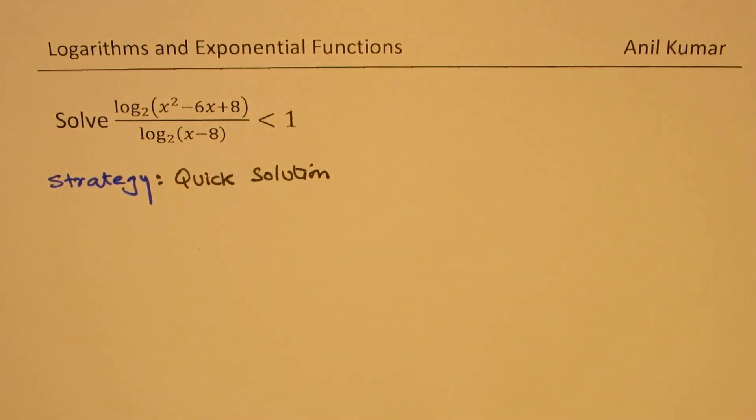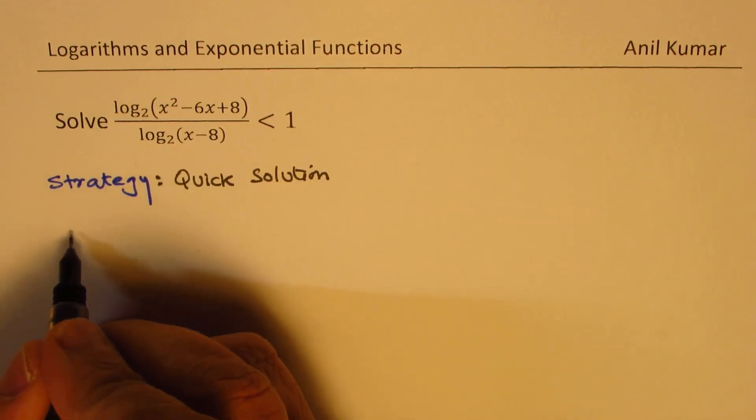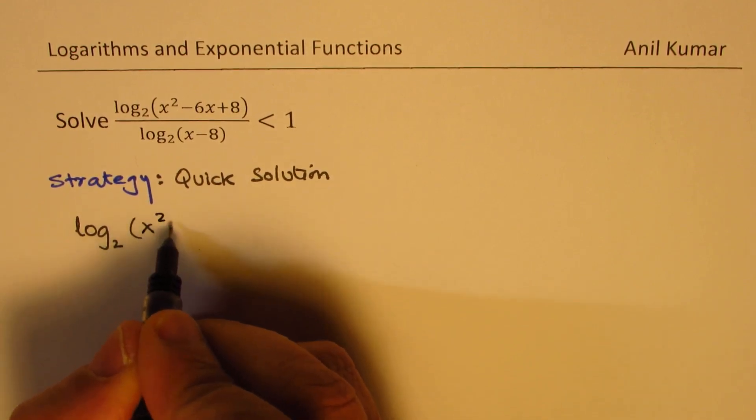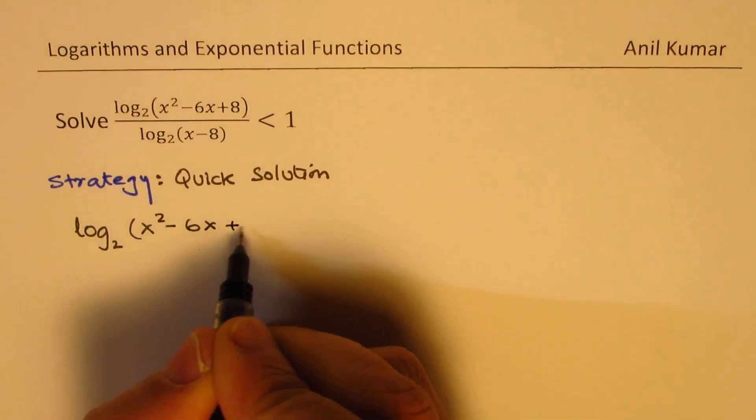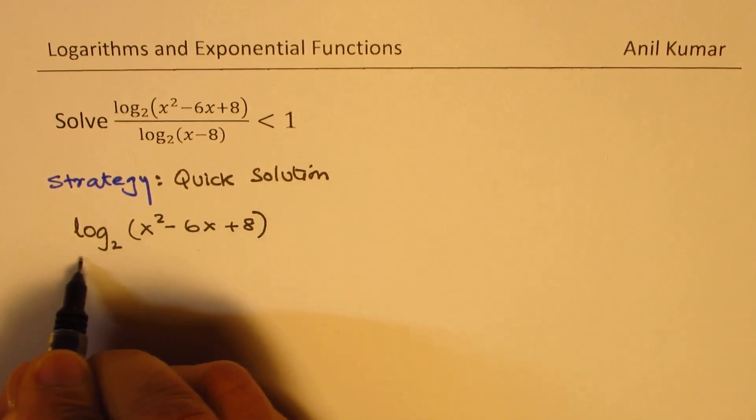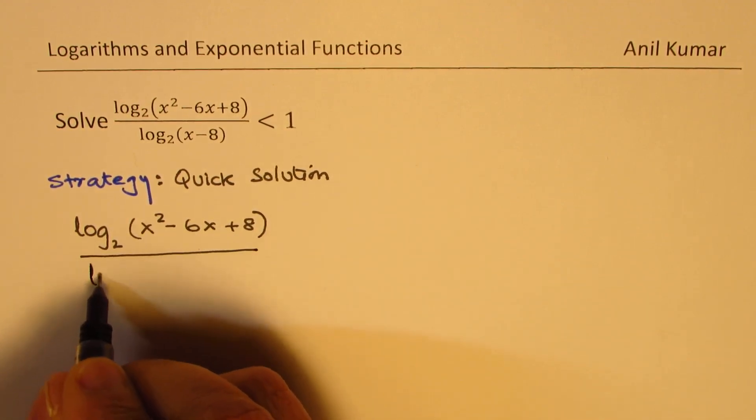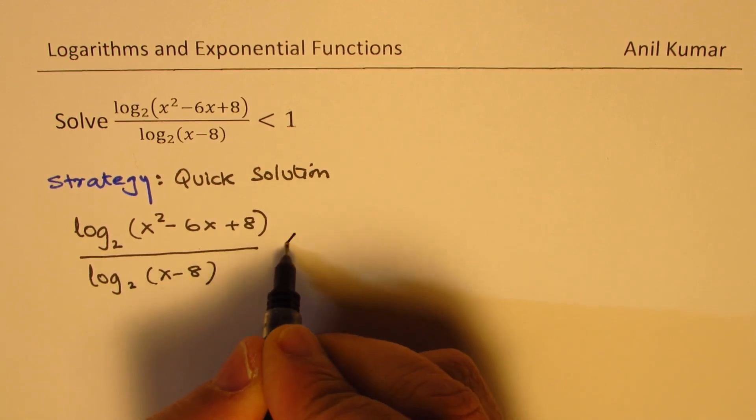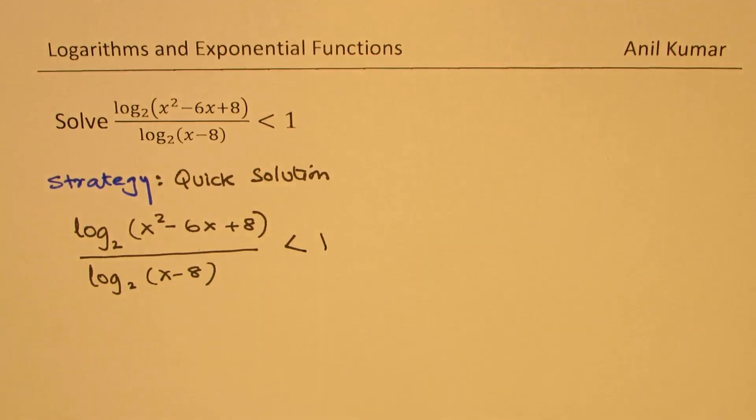This is a requirement especially for a multiple choice question. So if you look into the logarithmic function, let me rewrite this. We have log base 2 of (x² - 6x + 8) over log base 2 of (x - 8), and we want this to be less than 1.